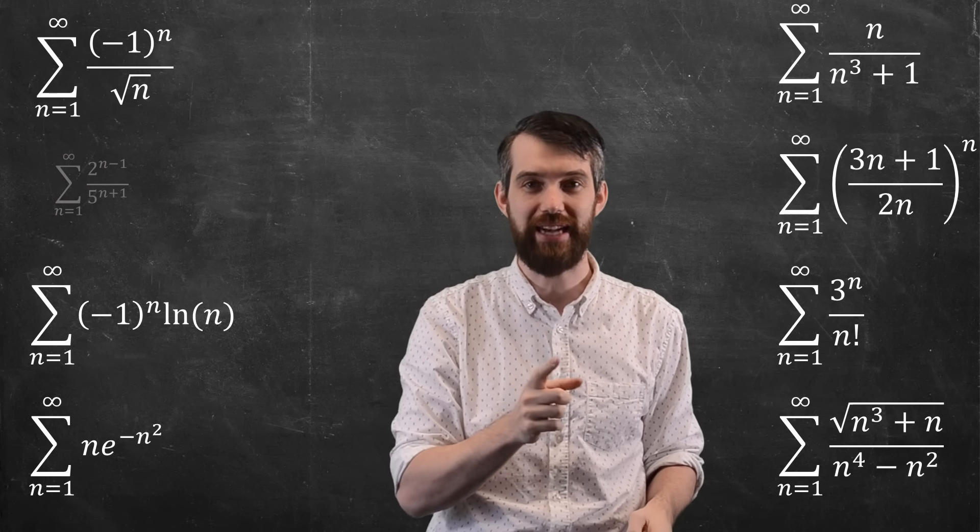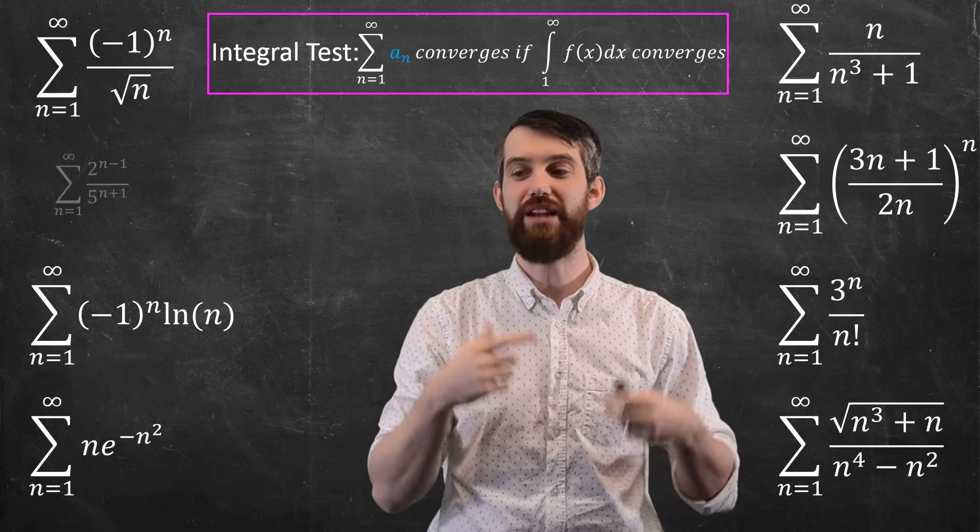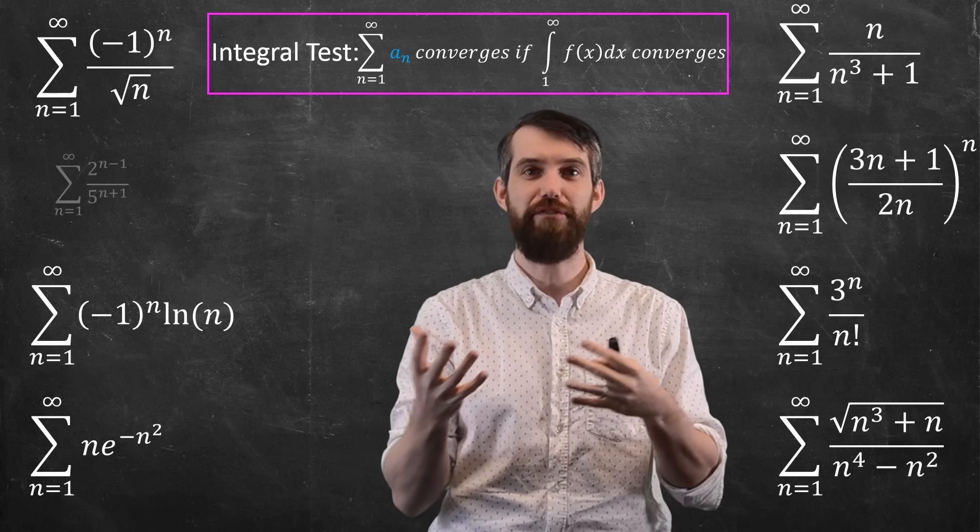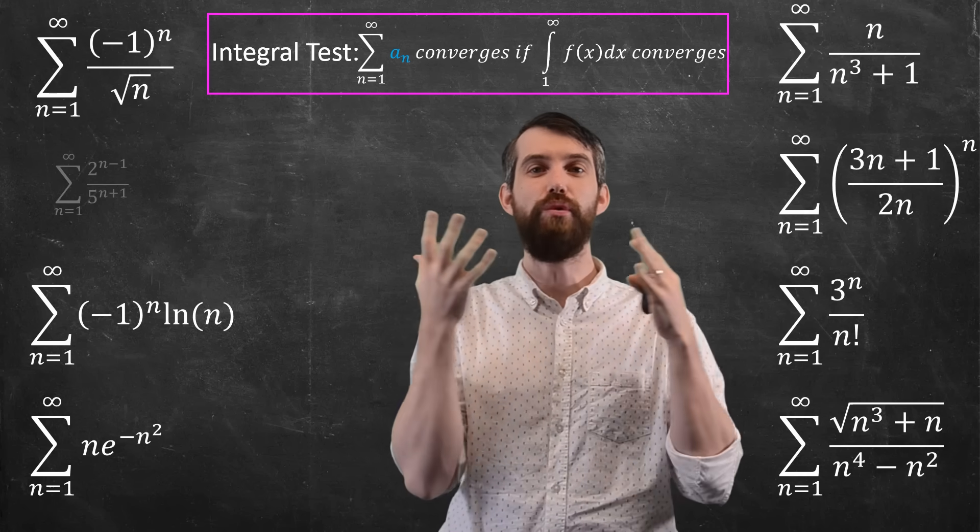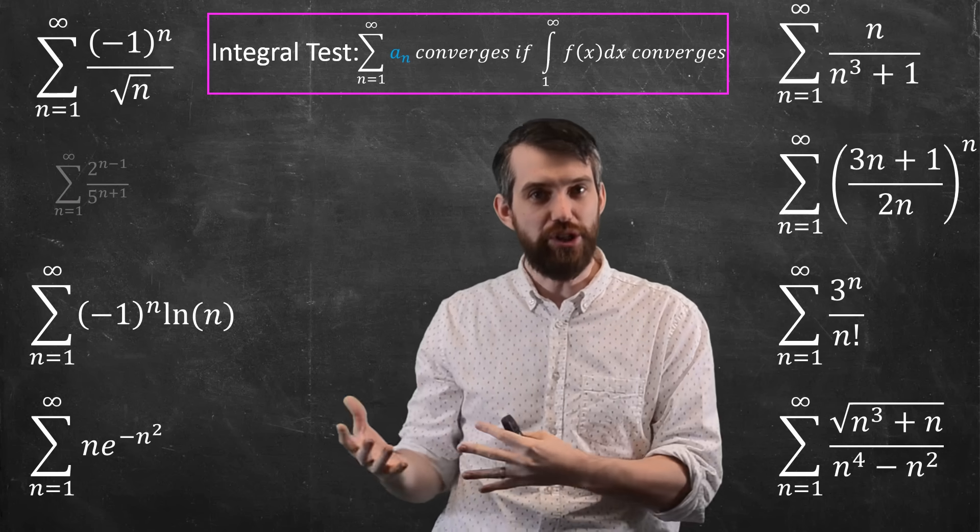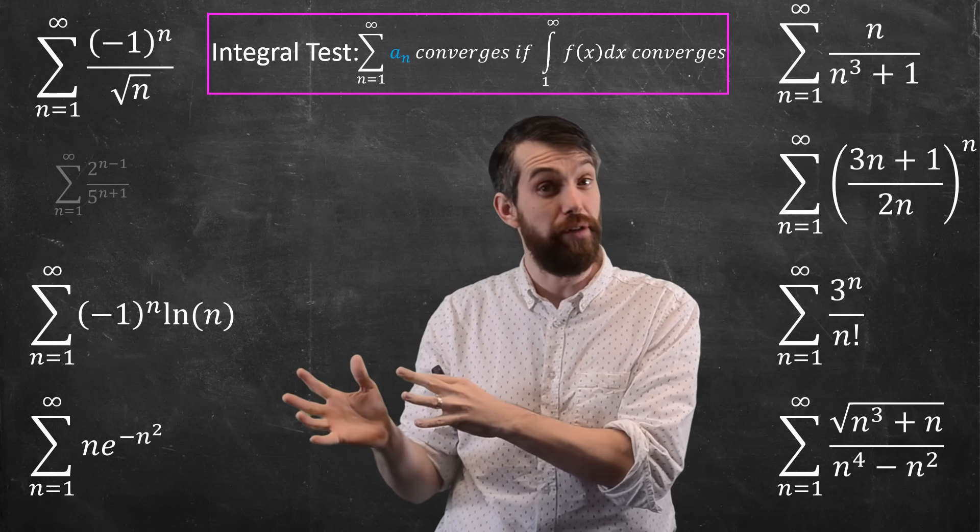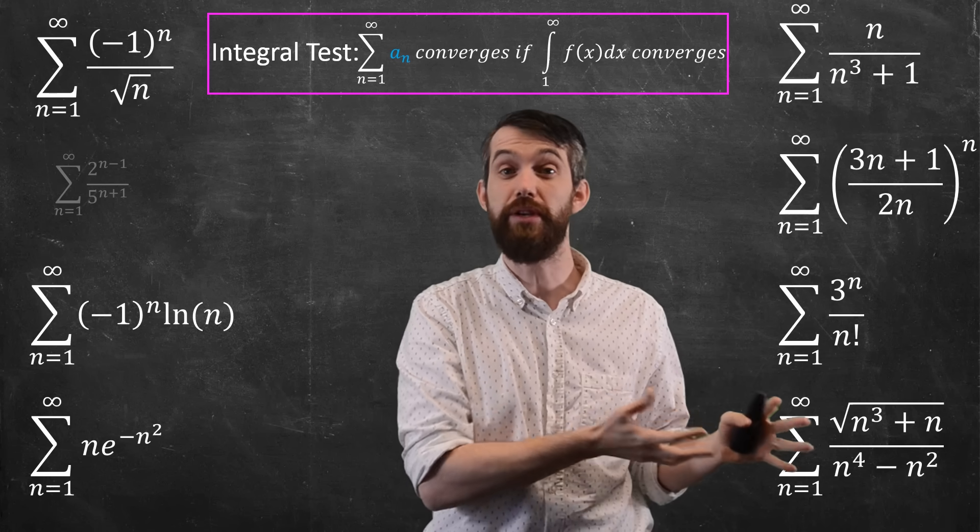Now, what was next? The next one we saw was actually the integral test. And the integral test said that if you have a series, you can look at the corresponding integral, where the function is just the replacement of n with x, and if that integral converges, then so too does the original series.